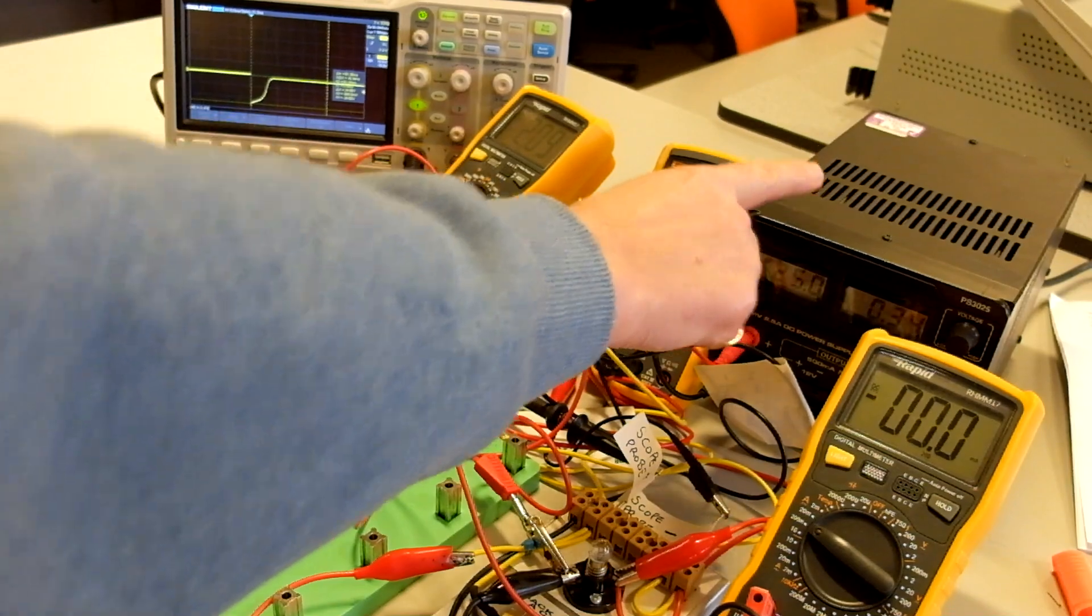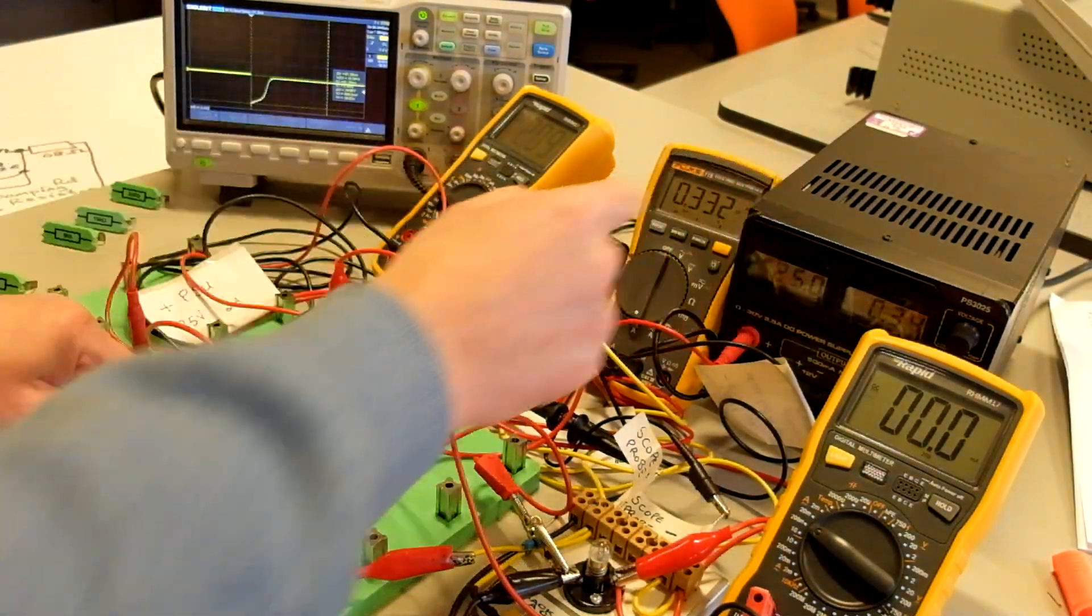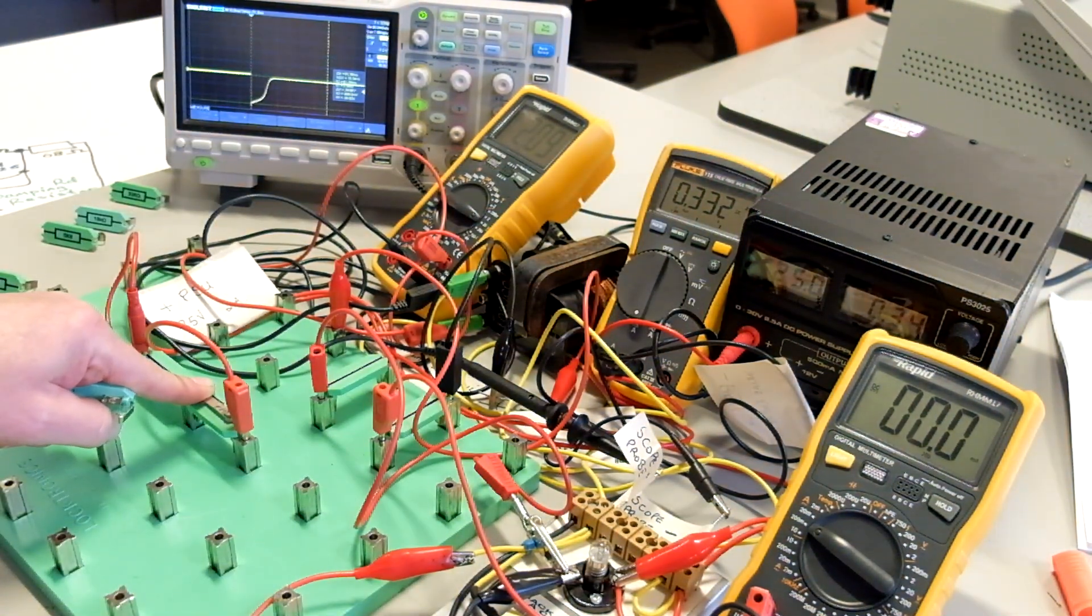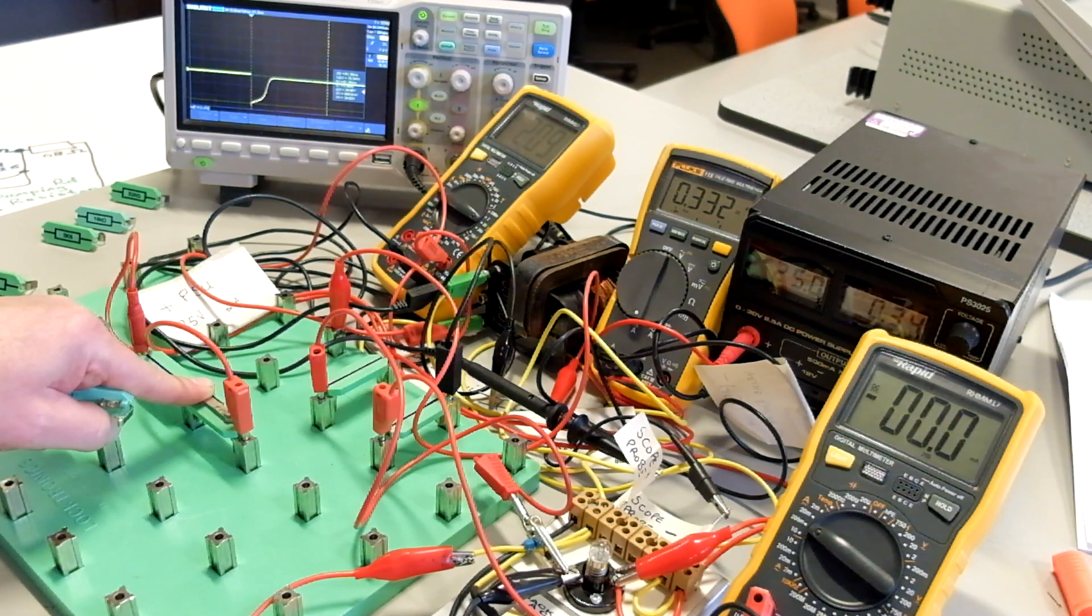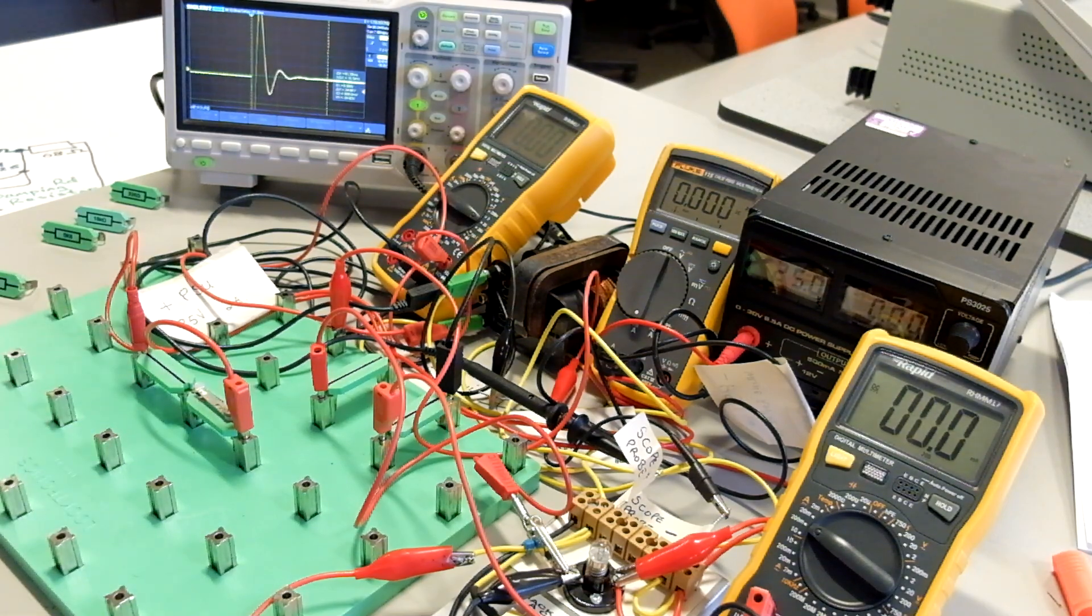That shape is largely determined by, well determined partly, by the electronics inside the DC power supply, and by the inductance in the circuit loop.